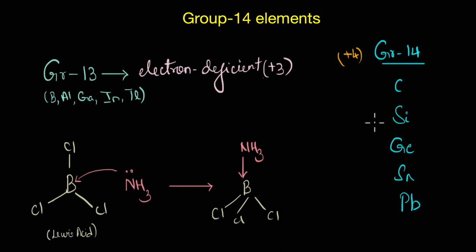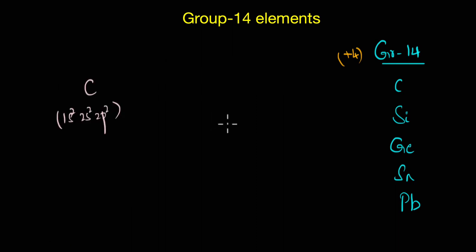In order to answer that we need to see if the central atom in a molecule gets an octet configuration. Let's take the example of carbon here. As the element has four valence electrons, they can combine with other elements by sharing of these four valence electrons.